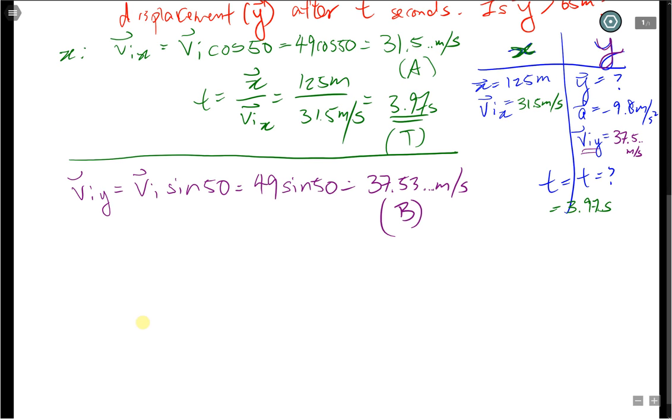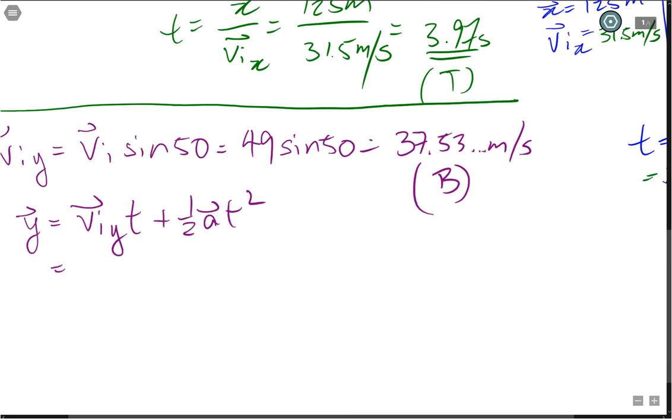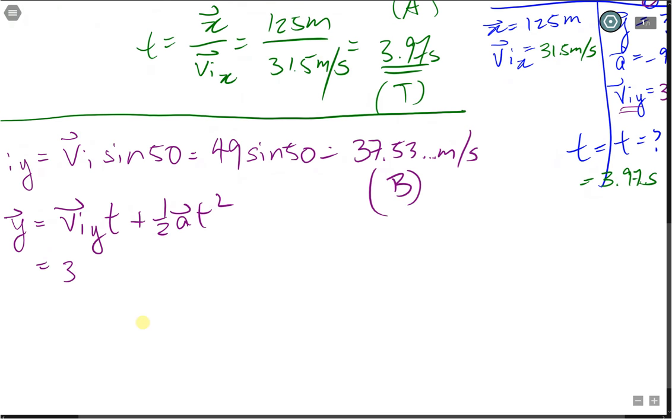We have the initial velocity, we have time, acceleration, and we need to find displacement. The equation you might be thinking of would have been this one. Y is equal to Viy times t plus 1/2 a t squared. Putting in our values, we have 37.53 times our time, which is 3.97, plus 1/2 negative 9.8, not positive, times our time, which is 3.97 squared.